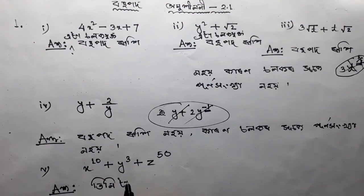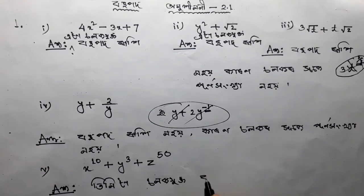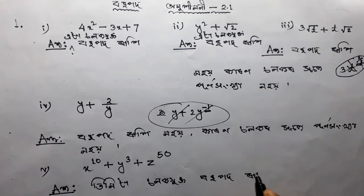Trinomial with like terms combined — tinnita-salak-jukta-bohupad.